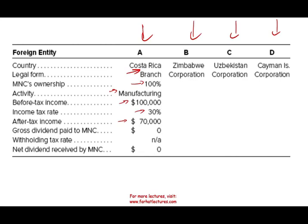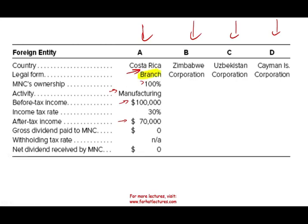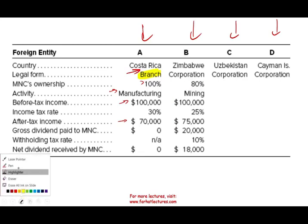The Costa Rican operation is a branch, so the income is going to be included in the US — period. Because it's a branch, we don't have to go any further. The first question is: is it a branch or a subsidiary? It's a branch, so that's done. Now, the Zimbabwean operation — it's a corporation, not a branch. It's a subsidiary.